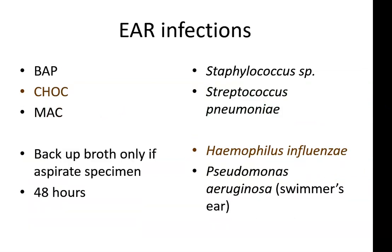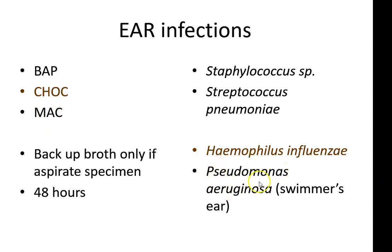Ear infections — we're definitely going to incorporate MacConkey into the setup because Pseudomonas aeruginosa is the number one causative agent of swimmer's ear. A lot of people see green discharge from their ears when they get an ear infection, usually because they've been swimming or couldn't get all the water out. Remember: if blood agar is in the setup, you quantitate from the blood agar — few, 1+, 2+, 3+, 4+ — unless it's a urine, then you give actual colony counts.